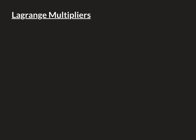We'll start with some function f, which is going to be a real-valued function of R3. Pictorially, if we have the three axes of R3 — the x-axis, the y-axis, and the z-axis — we've got the normal Cartesian coordinate system on R3, and our function takes every single point in this three-dimensional space and gives it a real value.